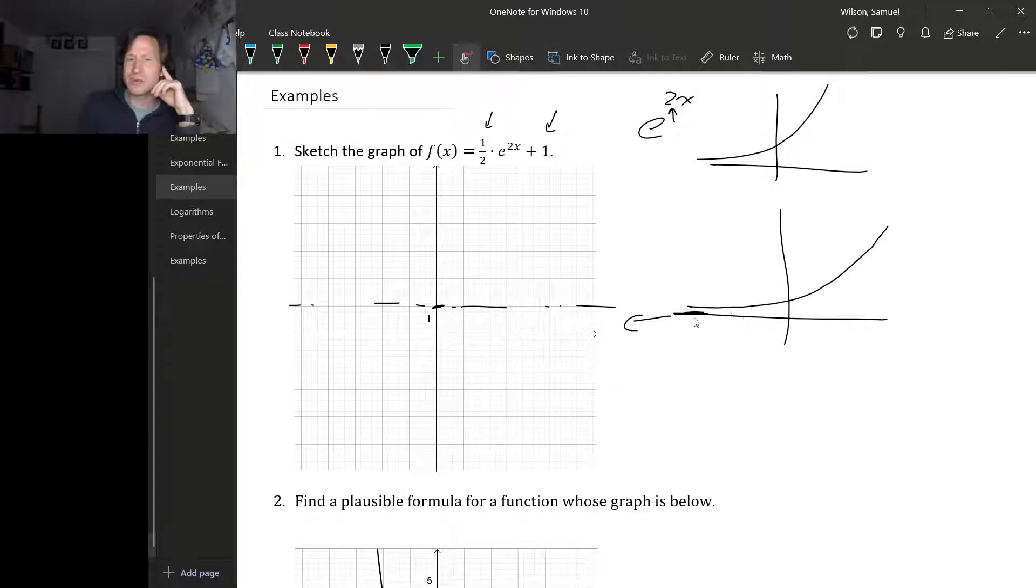Now we know the general shape. It's going to look something like this with a horizontal asymptote at 1. But to lock down the shape a little bit, let's plot a couple points. How about 0? If we plug in 0, we get 1/2 times e to the 0 plus 1. e to the 0 is 1. So this is 1/2 plus 1, which is 3/2.